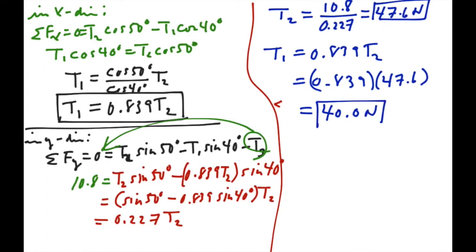So the force in tension 1, the cable headed in the downward direction, is 40.0 newtons. Note that the fact it goes down contributes to tension 3 in the negative y direction, which is accounted for by the negative sign in our equation. Our final answer is T1 equals 40.0 newtons.